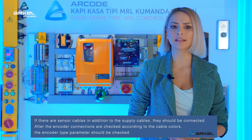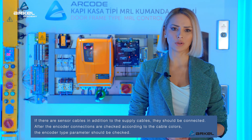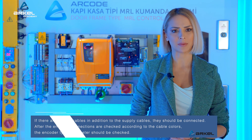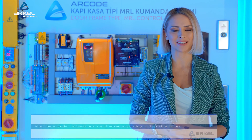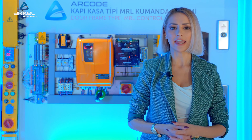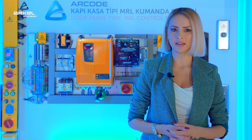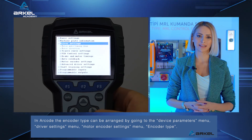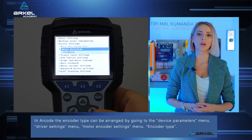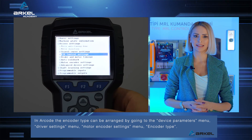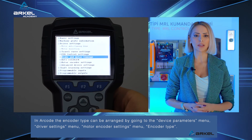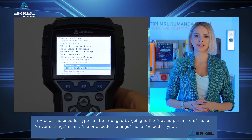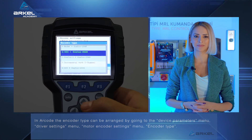After the encoder connections are checked according to the cable colours, the encoder type parameters should be checked. In Ar-Code, the encoder type can be arranged by going to the device parameters menu, Driver settings menu, Motor encoder settings menu, then Encoder type.